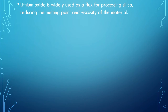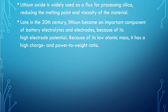Some important uses of lithium: lithium oxide is widely used as a flux in metallurgy — a type of chemical cleaning agent for processing silica, reducing the melting point and viscosity of the material. Viscosity is the measure of a fluid's resistance to flow. In the late 20th century, lithium became an important component of battery electrolytes and electrodes because of its high electrode potential and low atomic mass, giving it a high charge-to-weight and power-to-weight ratio.